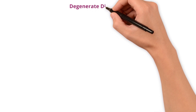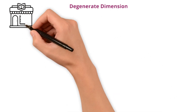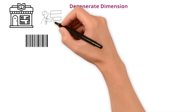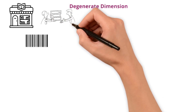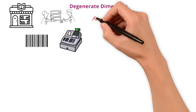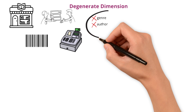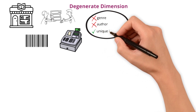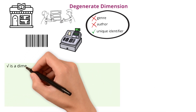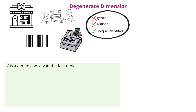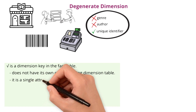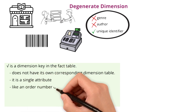Next one: degenerate dimensions. Imagine you are at a bookstore where every book has a unique barcode. This barcode is not part of any series or collection — it just serves to identify each book individually at the checkout. You don't need extra information like the genre or author to process the sale, just this unique identifier. Similarly, a degenerate dimension is a dimension key in the fact table that does not have its own corresponding dimension table, because it is a single attribute, typically an identifier like an order number or transaction ID.